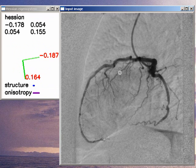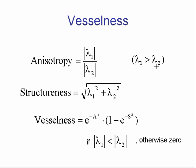The other two characteristics that we will talk about are structuredness and anisotropy. Both are computed from the eigenvalues. Anisotropy is a value that is high only if, at the close neighborhood of the point of interest, the change in image intensity is great in one direction and small in another perpendicular direction. These are the directions of the eigenvectors. Structuredness is a quantity that is high only if there is a big change in image intensity in the close neighborhood of the point of interest.